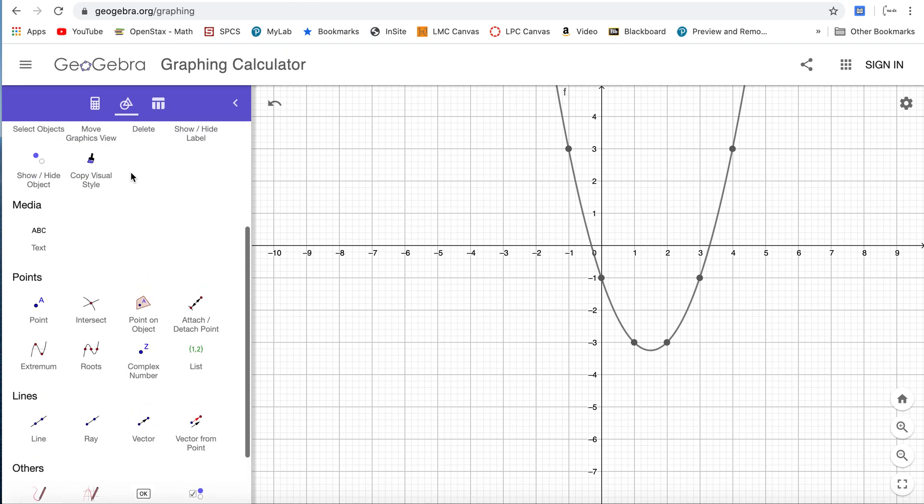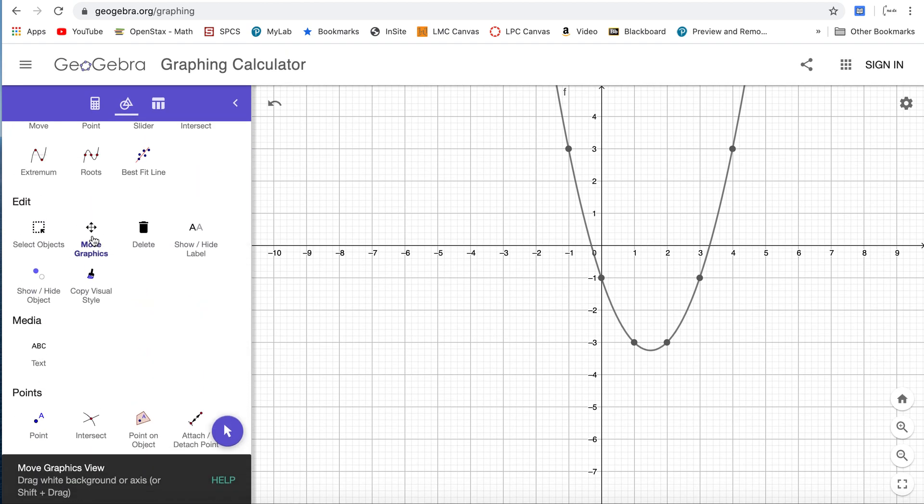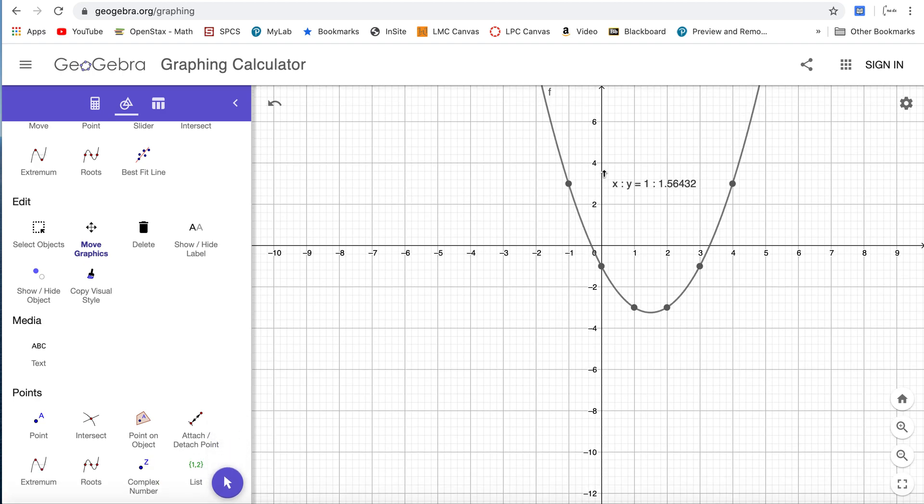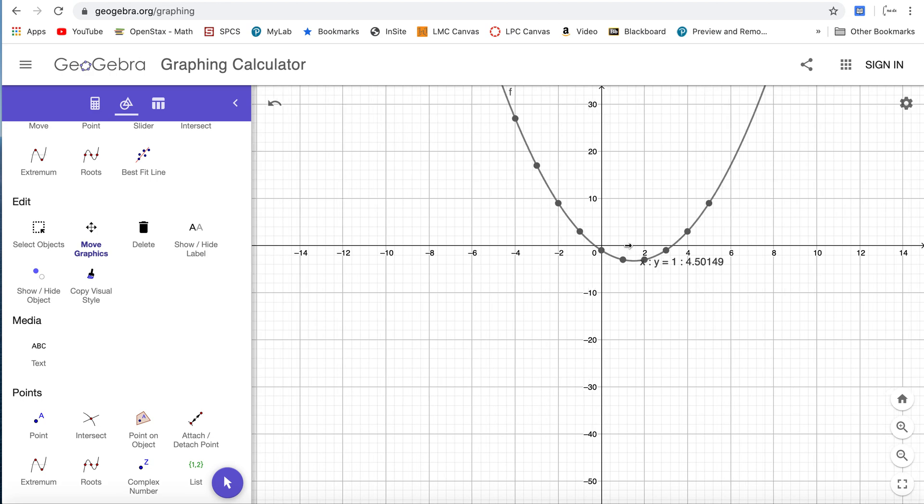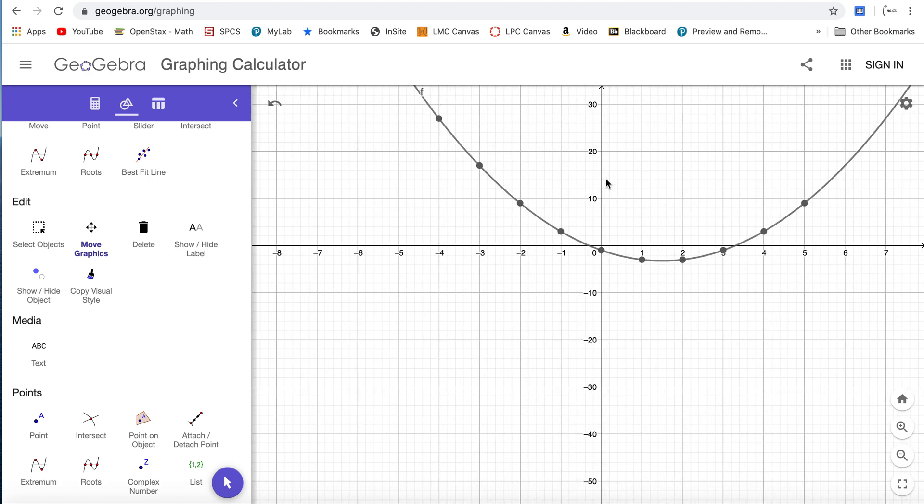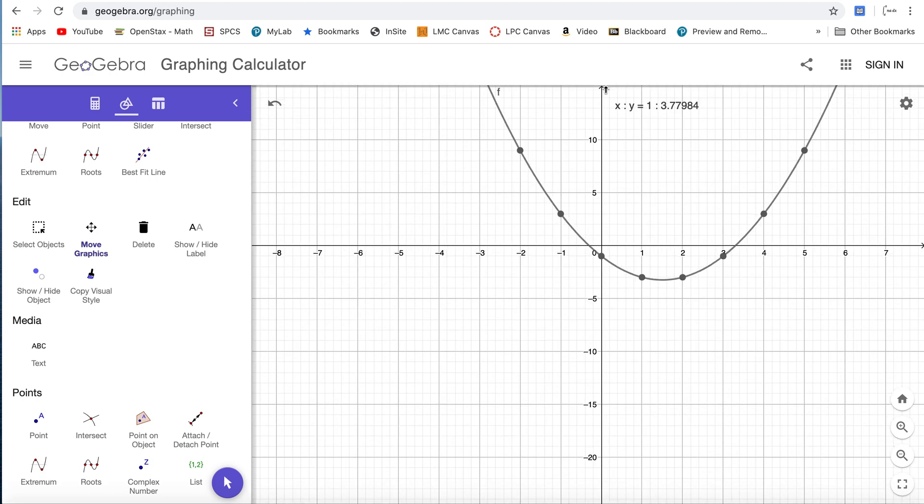If you look around there's all sorts of tools. One of the tools under edit is move graphics view. You're going to want to hover your cursor over the y-axis until you see a one-sided arrow and then pull down as you click. You can do the same thing with the x-axis in any direction you want.